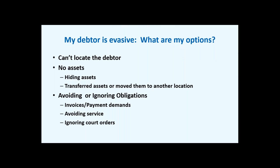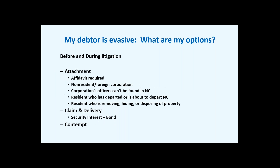The next topic is evasive debtors — what can we do when we can't locate the debtor, the debtor has no assets, could be hiding assets, could be moving assets around — maybe to another property or a friend's location because they know we're coming after it? Or they could be ignoring invoices and payment demands, avoiding service of papers, or ignoring court orders. There's plenty we can do in all these situations.